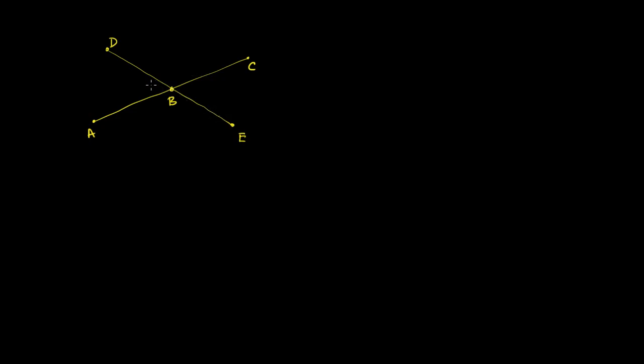I'm just going to pick an arbitrary angle over here — let's say angle CBE. This is angle CBE. What I want to do is prove that angle CBE is always going to be equal to its vertical angle, which is angle DBA. Then I prove that vertical angles are always going to be equal, because this is just a generalizable case. So what I want to prove here is: angle CBE is equal to angle DBA.